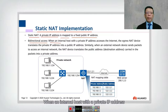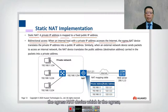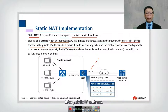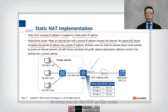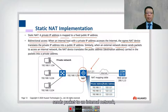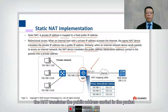We also have the concept of bidirectional access. When an internal host with a private IP address accesses the internet, the egress NAT device translates the private IP address into a public IP address. So when you do the NAT on this router, the interface on the egress will actually do the translation.